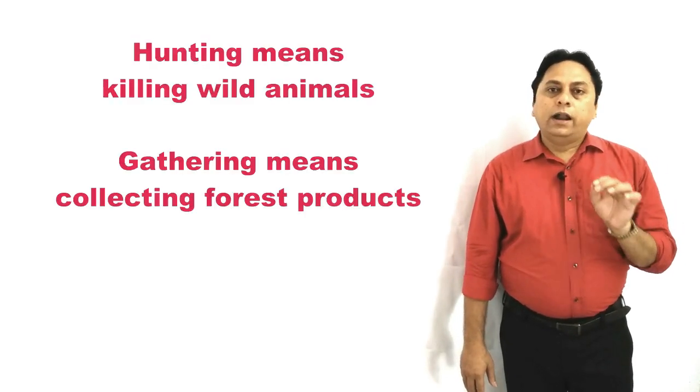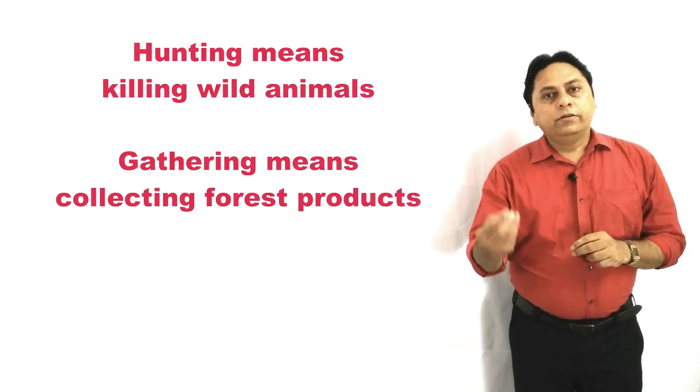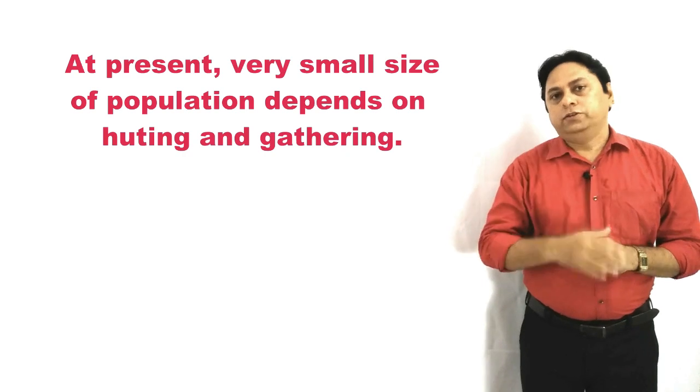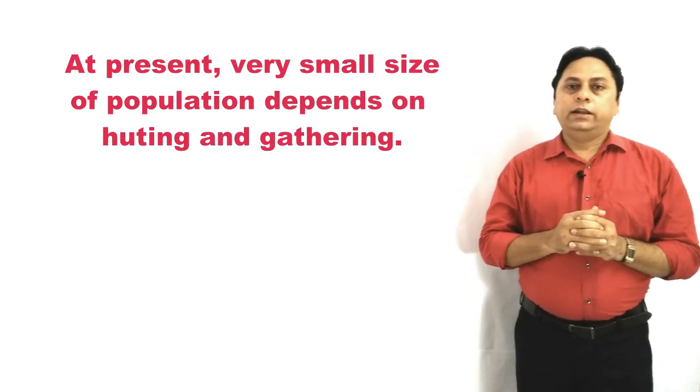Hunting and gathering is the oldest occupation of people on this Earth. Hunting means killing of animals; gathering means collecting fruits, flowers, leaves, and roots from the forest. During ancient times, all people on this Earth depended on hunting and gathering — there were no other occupations. But in the present modern age, most people are dependent on other activities like rearing animals, farming, or working in factories. Only a very small population, especially tribal people, are still dependent on hunting and gathering.